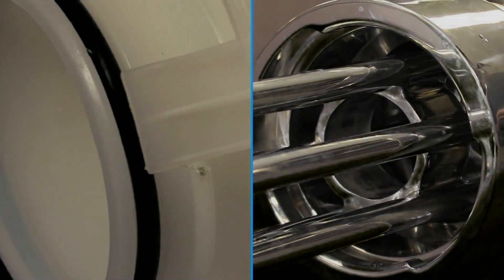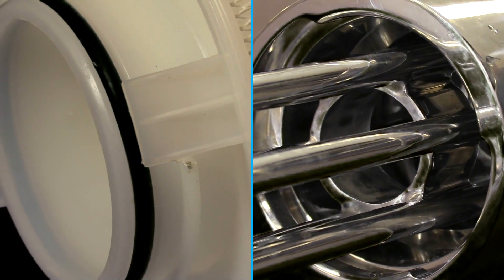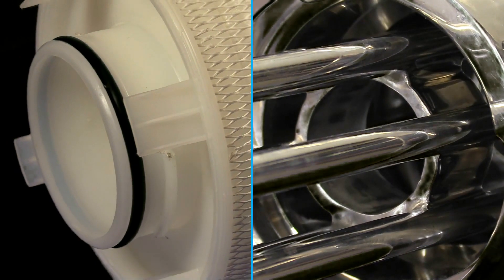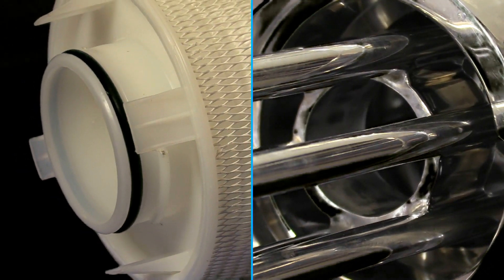The notched end of a high flow filter fits into the housing base via a twist to lock seating mechanism that provides a positive leak proof seal.